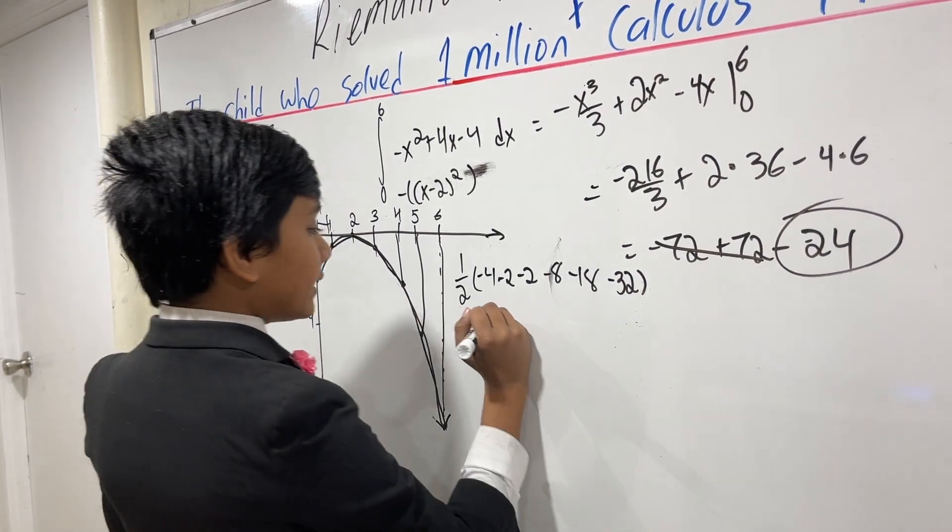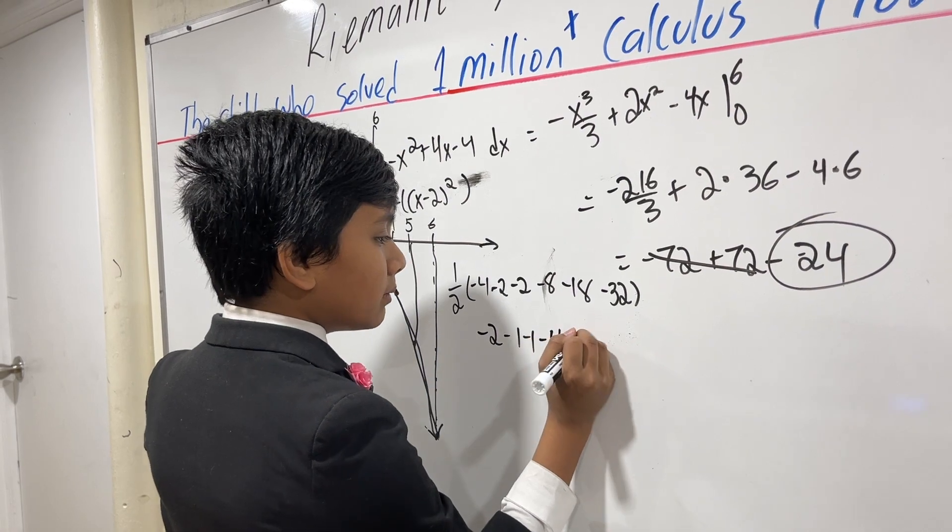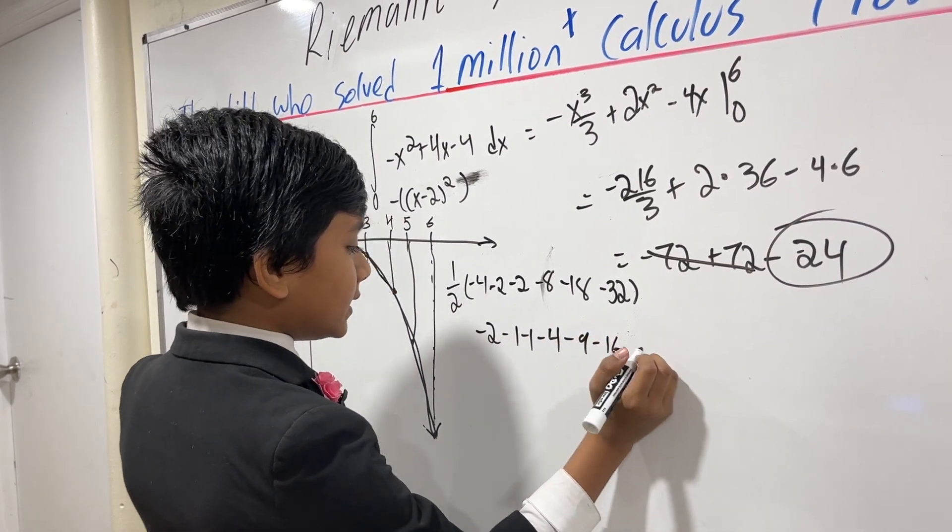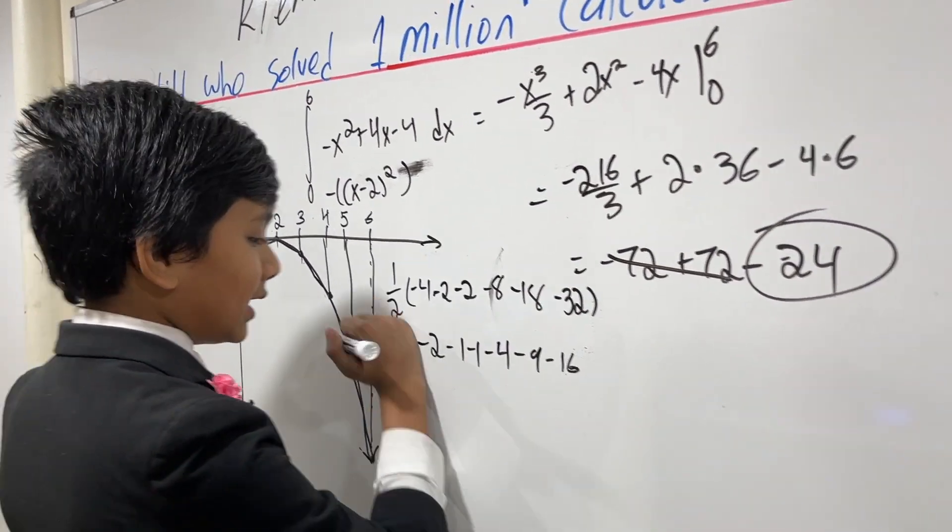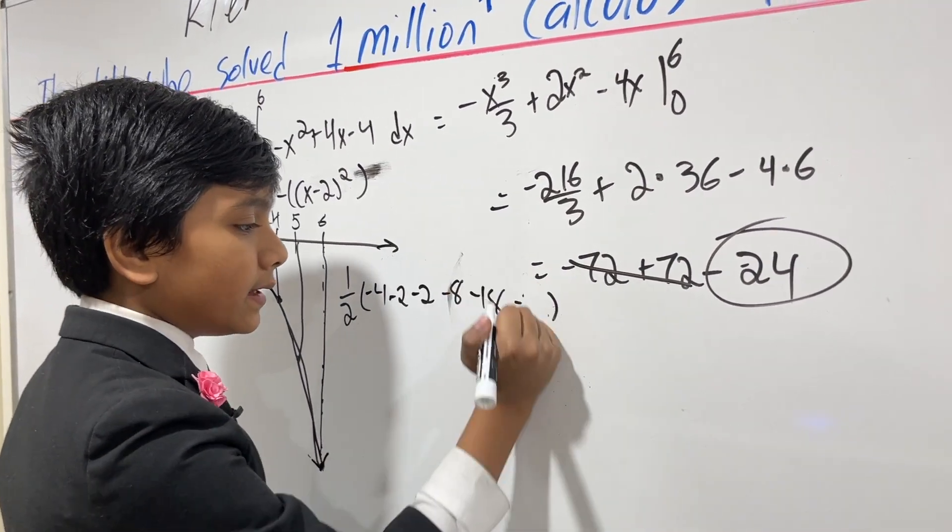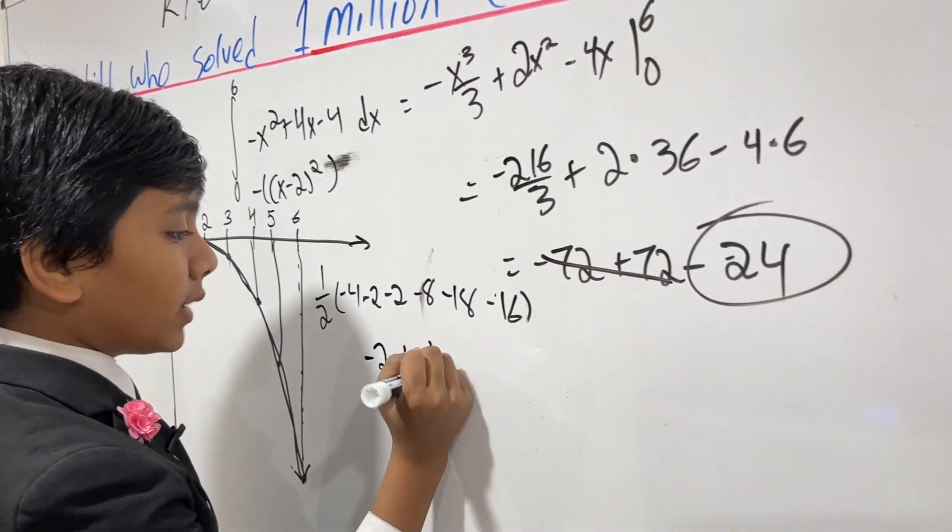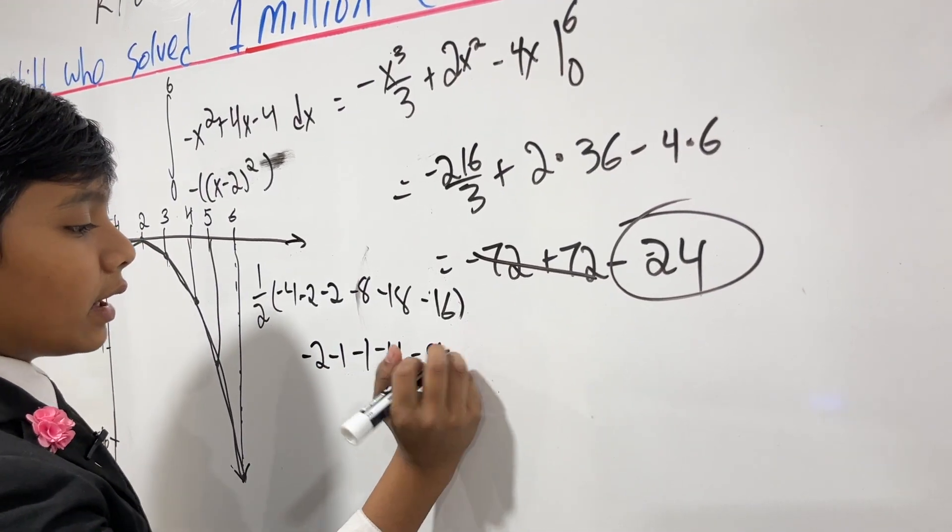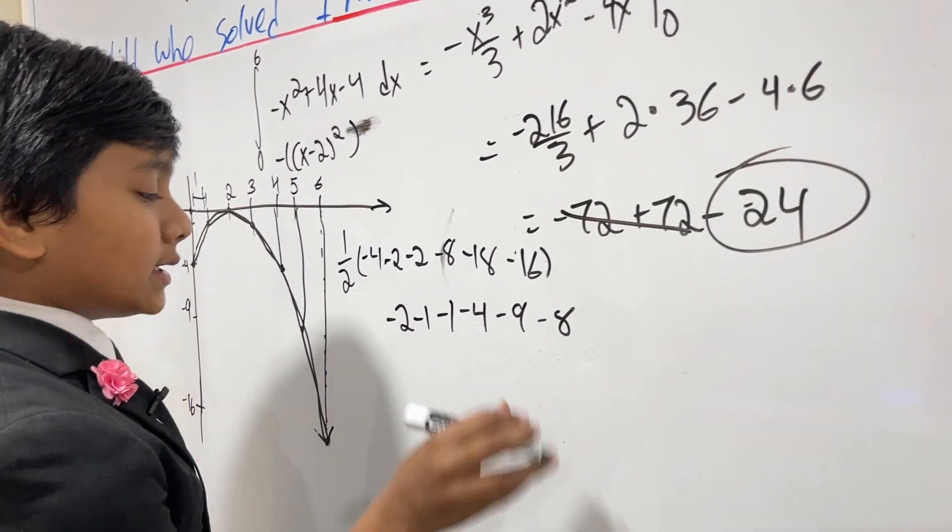So now, halving this, we see that we get minus 2, minus 1, minus 1, minus 4, minus 9, minus 16. All right? So now, oh wait, I wasn't supposed to double the last 16. Sorry buddy! So it actually looks like minus 2, minus 1, minus 1, minus 4, minus 9, minus 8. So now let's add that up.